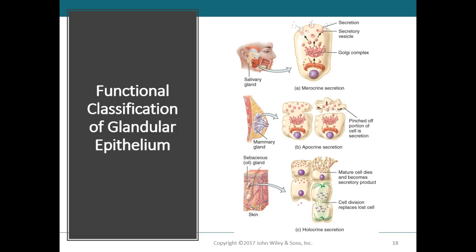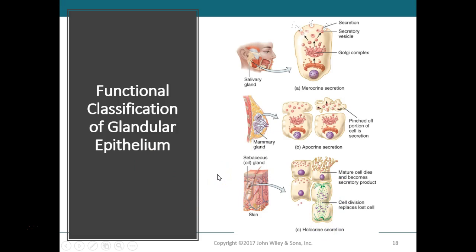The third functional type is the holocrine secretion, where secretory products accumulate in the cytosol and when the cell dies, both the cell and its contents are discharged as the glandular secretion. The dead cell is then replaced by a new cell being made. This is how oil glands — or sebaceous glands — within the skin secrete their product out onto the surface.